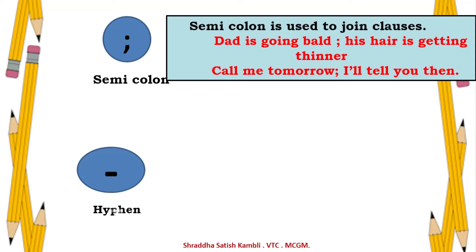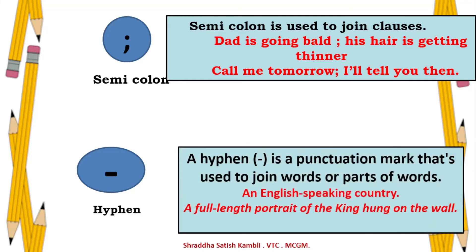A hyphen is a small dash used to join words or parts of words. For example: 'an English-speaking country' — English and speaking are joined by a hyphen. Another example: 'a full-length portrait of the king hung on the wall' — full and length are joined using a hyphen.